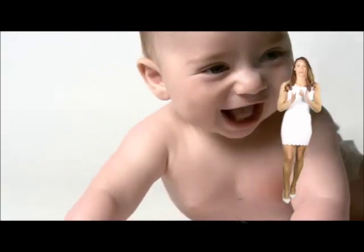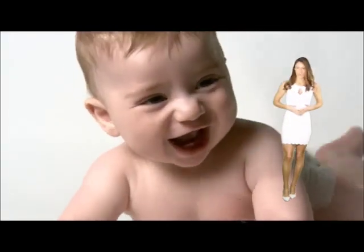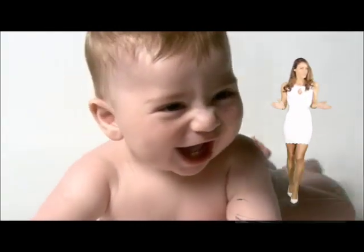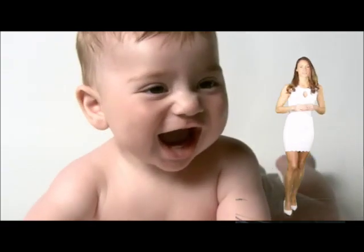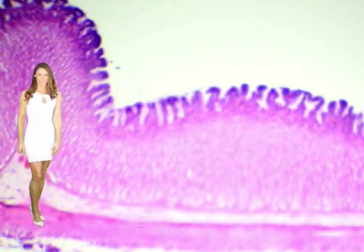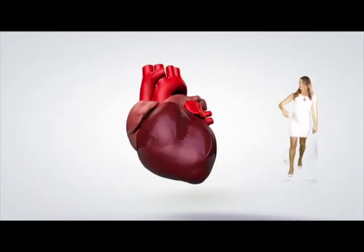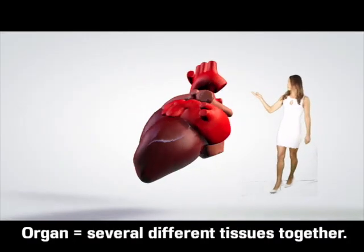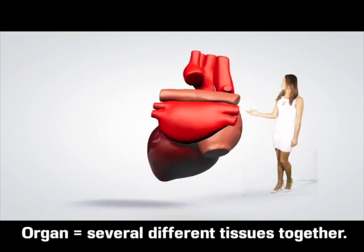In human beings and other multicellular organisms, these cells tend to be organized in specific ways. A group of like cells performing a particular function is referred to as tissue. An organ is a discrete structure composed of several different tissues. An organ system is a group of organs together performing an overall function.